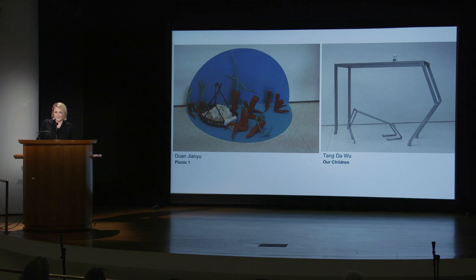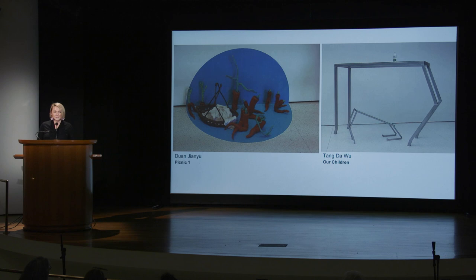After looking through the teacher resource, these were the two works that I was drawn to. I thought that Duan Zhenyu's Picnic One would be really fun for students to talk about because of these anthropomorphic carrots and this really bright color scheme. And then as I looked further, I came across Tang Da Wu's Our Children, and I was really excited that this had an anthropomorphic look to it as well. When I was reflecting on these two pieces, I thought about gesture and how these pieces would be a great starting place for a drawing unit on gesture.